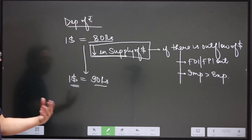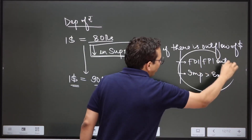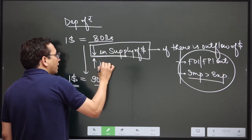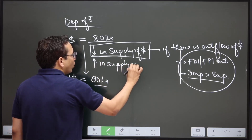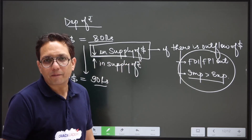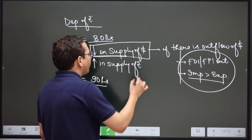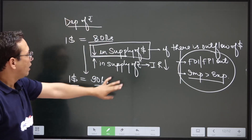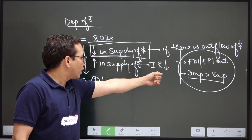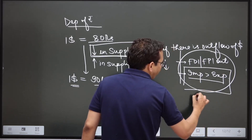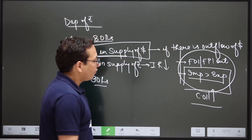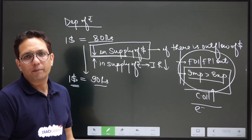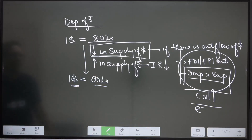Rupee depreciation happens if there is FDI/FPI outflow, imports are more than exports, or if there is a reduction in interest rates in India — which increases supply of rupee and reduces its value. For example, if price of crude oil is increasing, rupee would depreciate. If prices of electronic items are increasing or we are importing more palm oil, rupee would still depreciate.